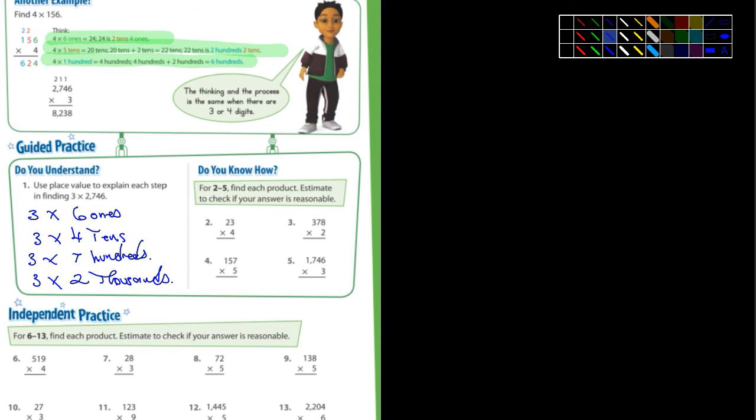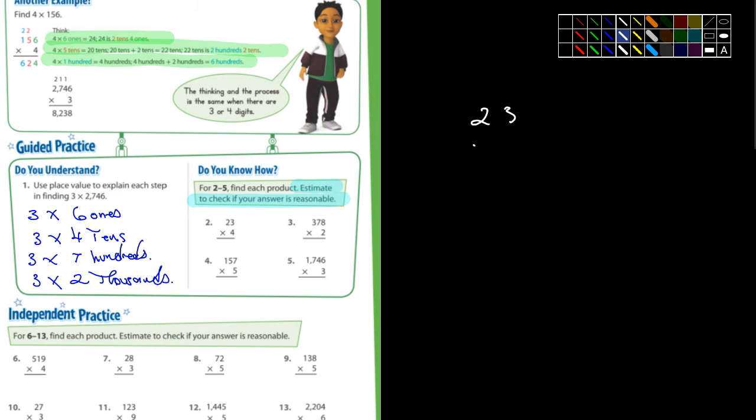Okay, and then 2 through 5 says find each product. So the product is the answer to a multiplication problem. And so you would just do 23 times 4. And then it says estimate to check to see if your answer is reasonable. And I think that's always probably a good thing to do. So let's just do this first here. I'm going to go right over here because there isn't much room to work. Look, 23 times 4. So 4 times 3 is 12. Put down the 2. Carry the 1. 4 times 2 is 8. Plus 1 is 9. The answer is 92.